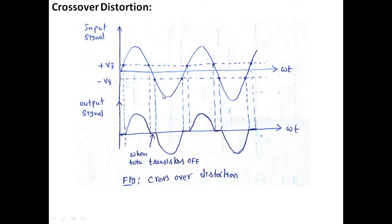Similarly, for the negative half cycle, transistor Q2 requires VBE = 0.7V to turn on. Both Q1 and Q2 remain off near the zero-crossing region. Because of this dead zone around zero, the output is not a pure sinusoid — distortion occurs as the signal crosses from positive to negative and back. This is called crossover distortion. In the next class we will discuss methods to eliminate it.